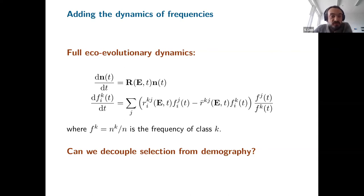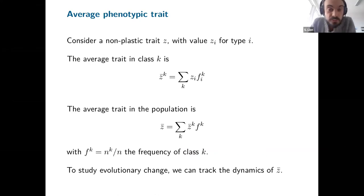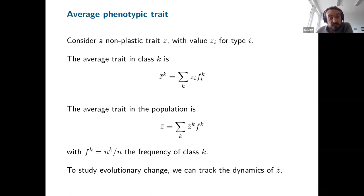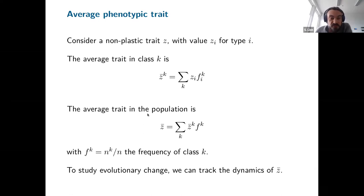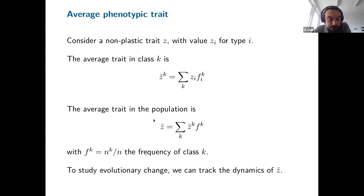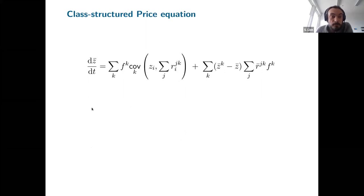Can we decouple selection from demography? One way to make progress is to introduce an average phenotypic trait and try to track the dynamics of this average trait. The average trait within class k (Z-bar_k) is the average of trait values weighted by the frequency of each type in class k. The average trait in the population is then an average over all classes of Z-bar_k times the frequency of class k. If we write an equation for the dynamics of this trait, we get a class-structured Price equation.